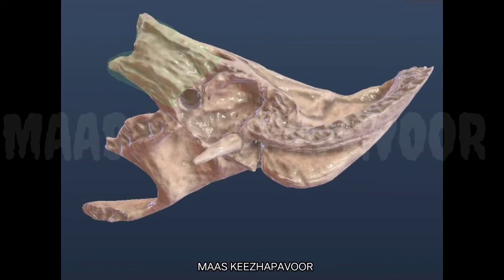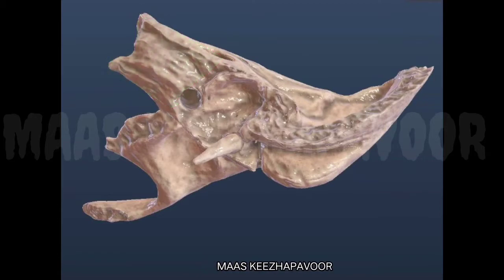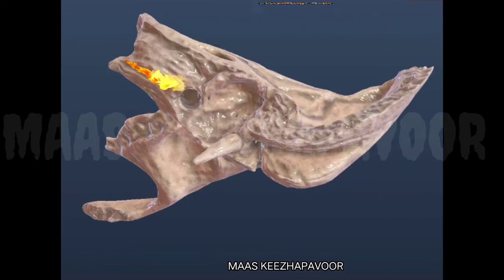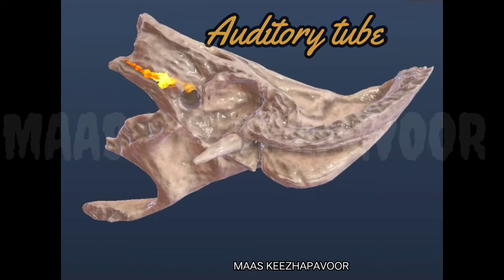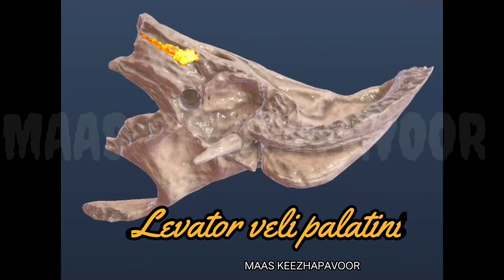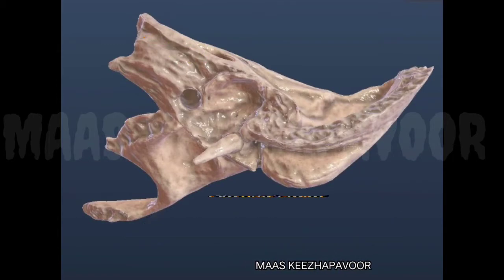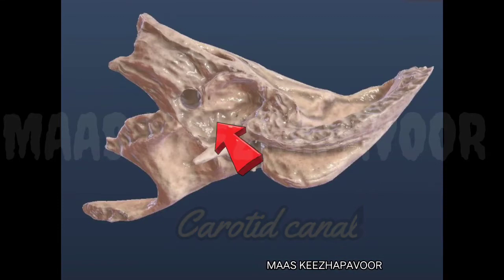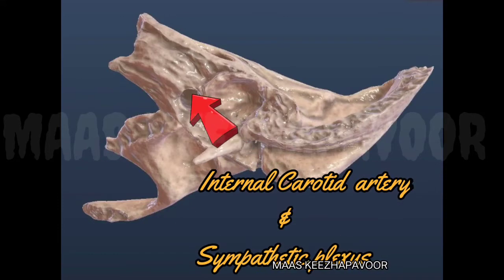The inferior surface of the petrous part is seen in the base of skull. There is a quadrilateral area seen near the apex. The anterior part of this area is the sulcus tubae, which lodges the cartilaginous part of the auditory tube. The posterior part gives origin to the levator veli palatini muscle.